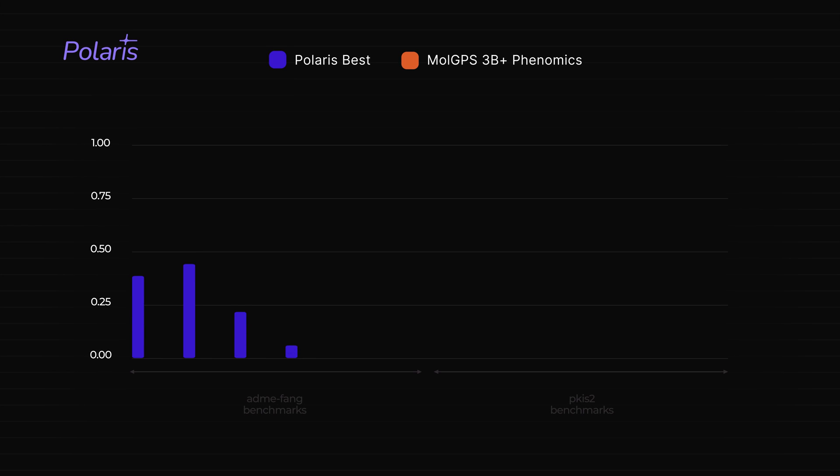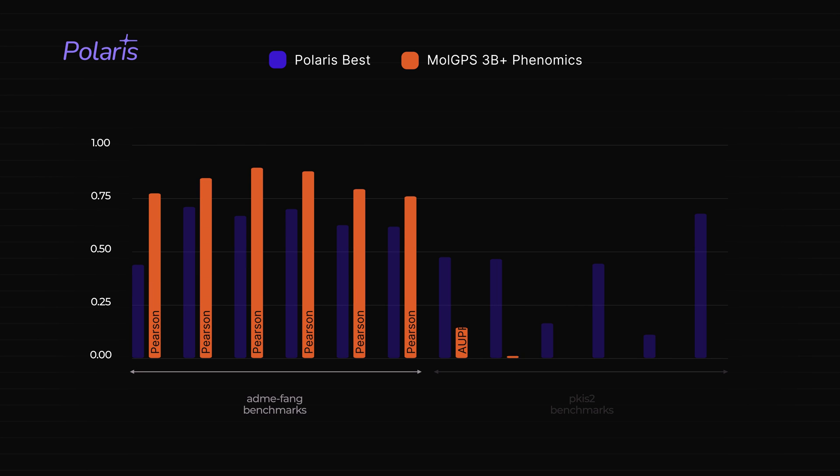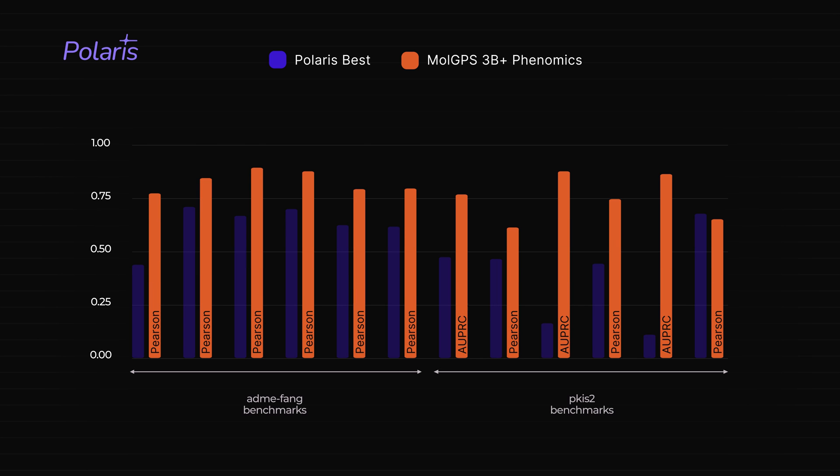In further scaling experiments, a three billion parameter version of MolGPS with phenomics data continues to see massive performance increases on benchmarks for ADMET and protein binding tasks in Polaris, a new benchmarking platform for drug discovery.